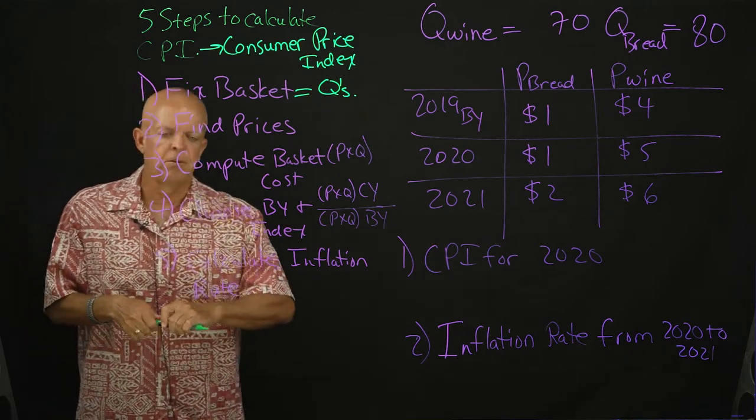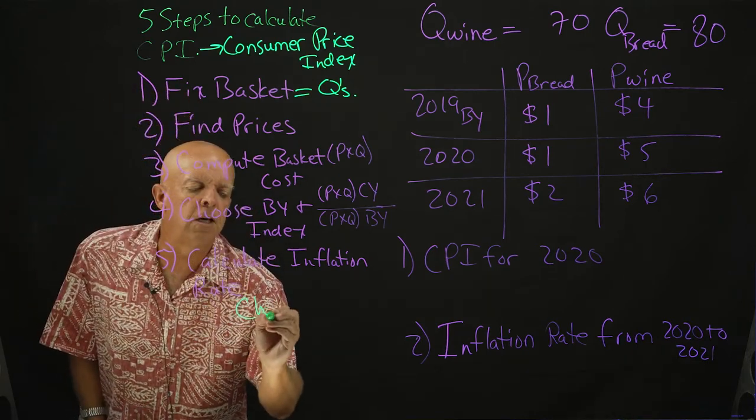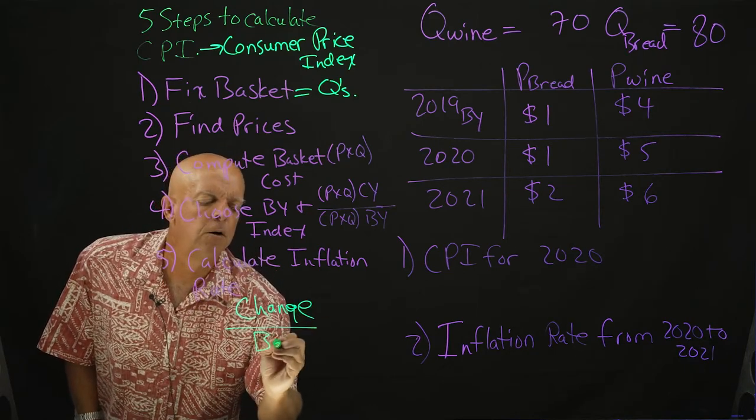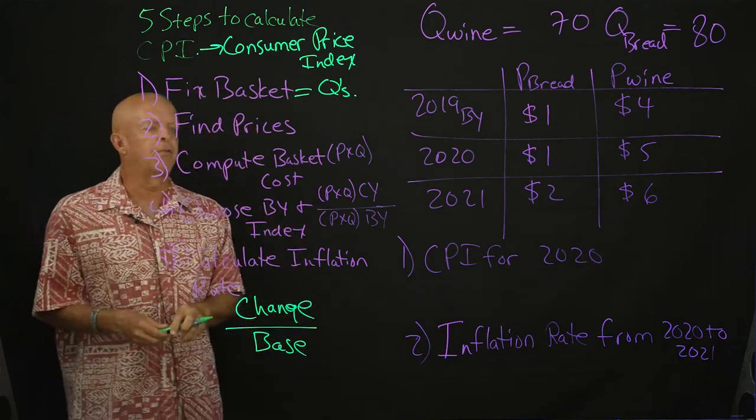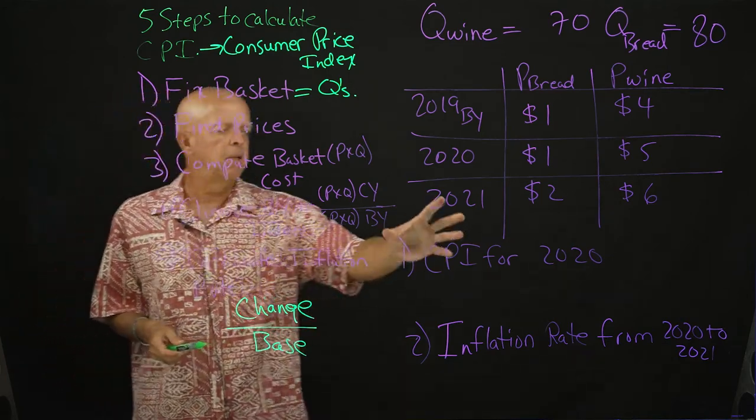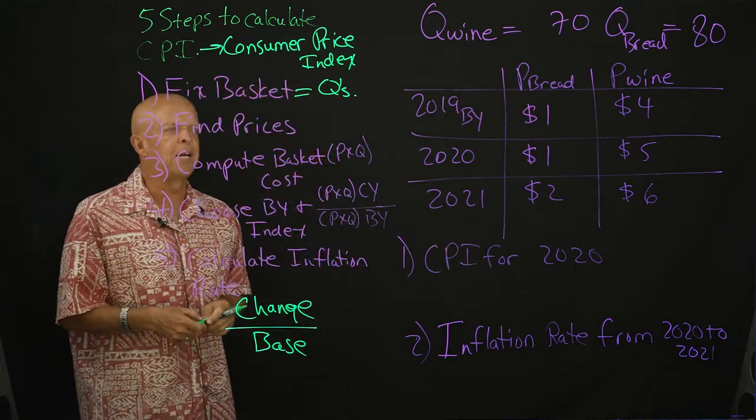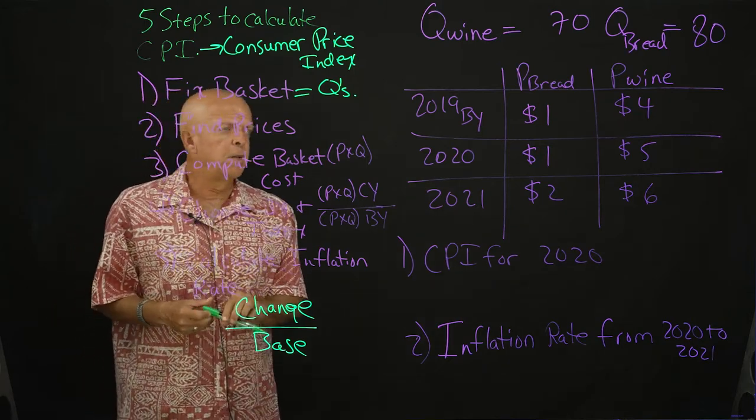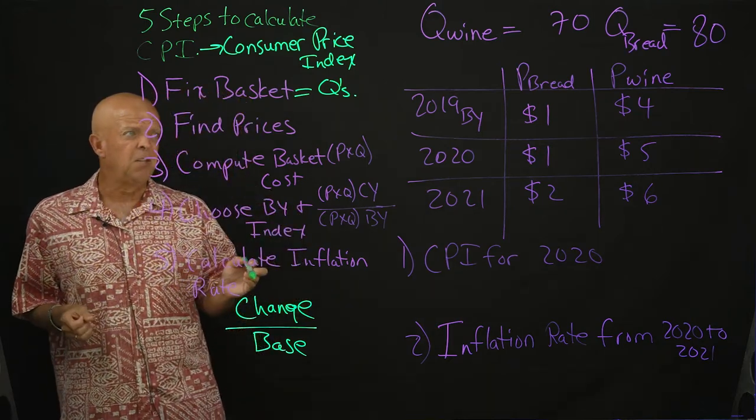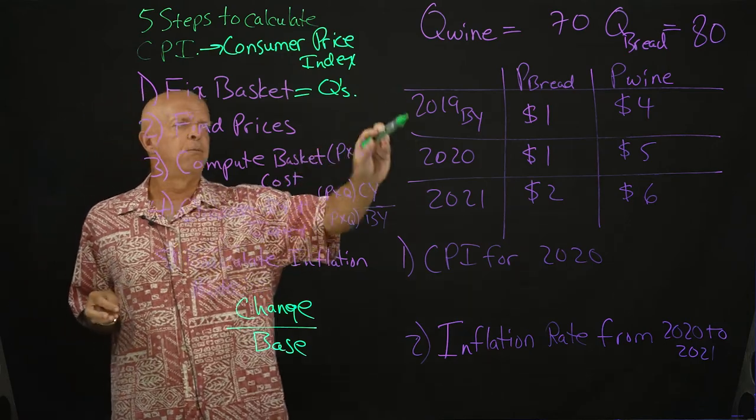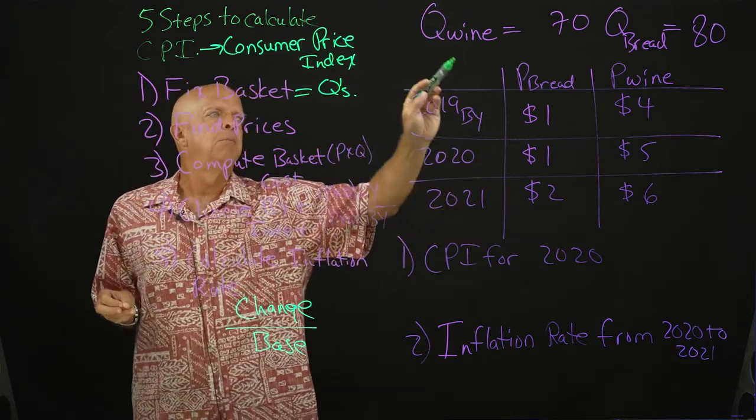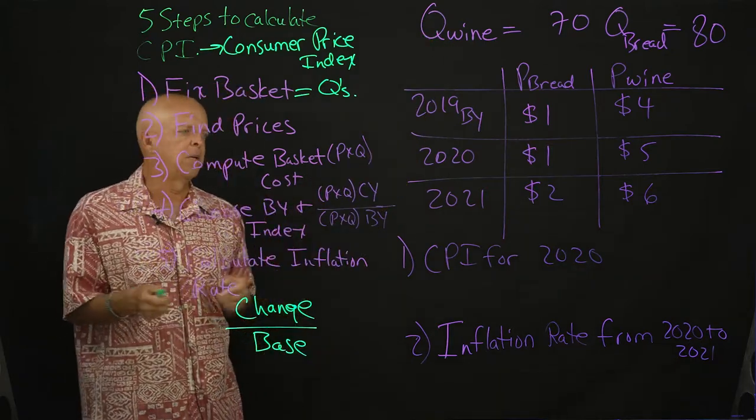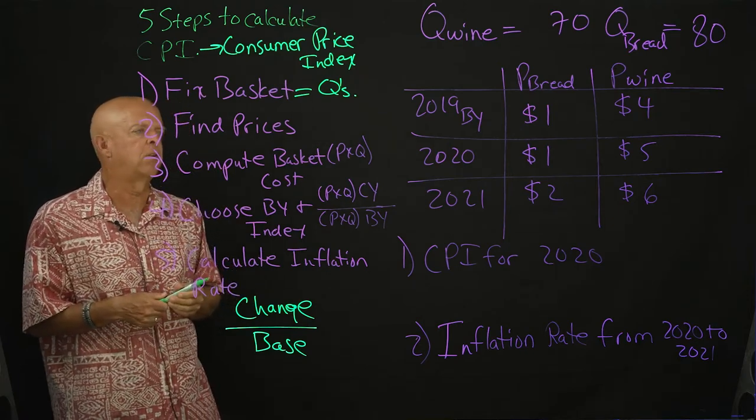Very much like the GDP deflator, it is going to be the price times quantity of the current year over the price times quantity of the base year. And finally we're going to calculate the inflation rate. The inflation rate I always like to say is the change over the base. We'll do that as our final step.